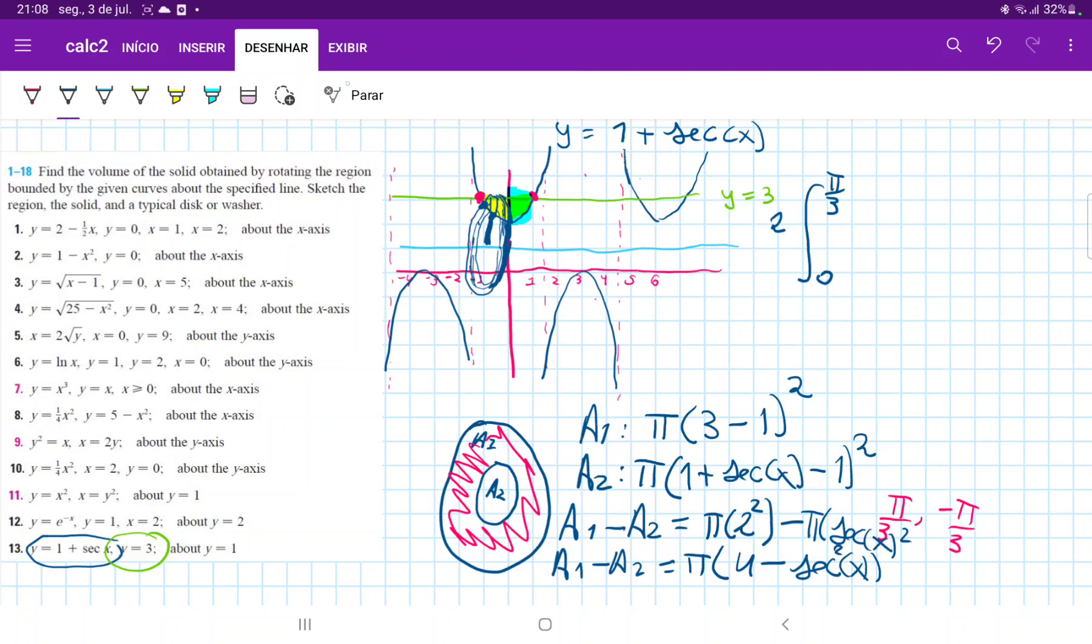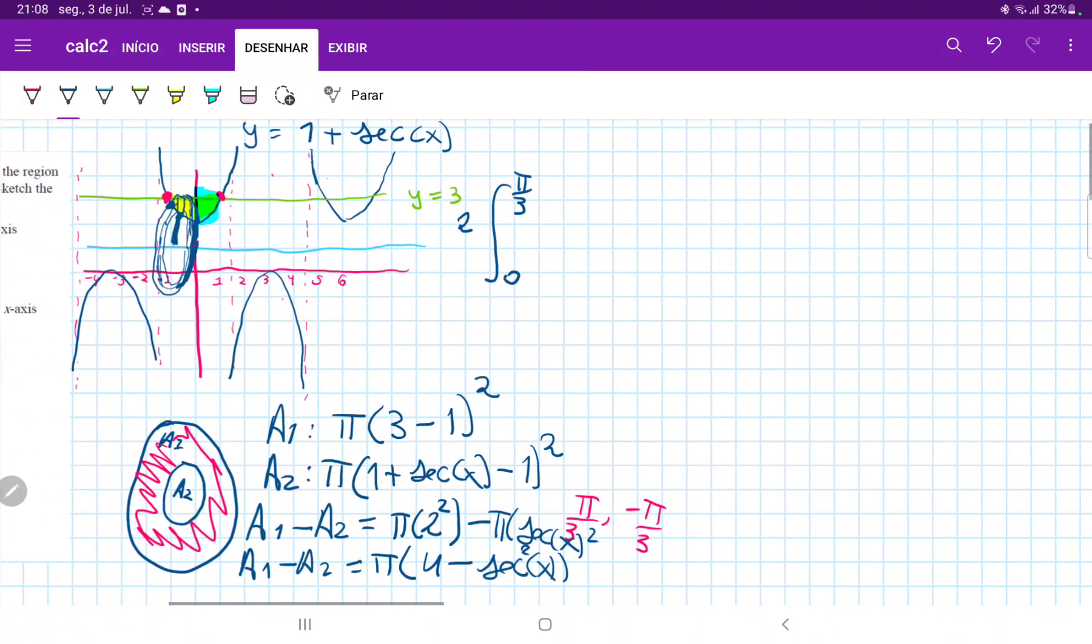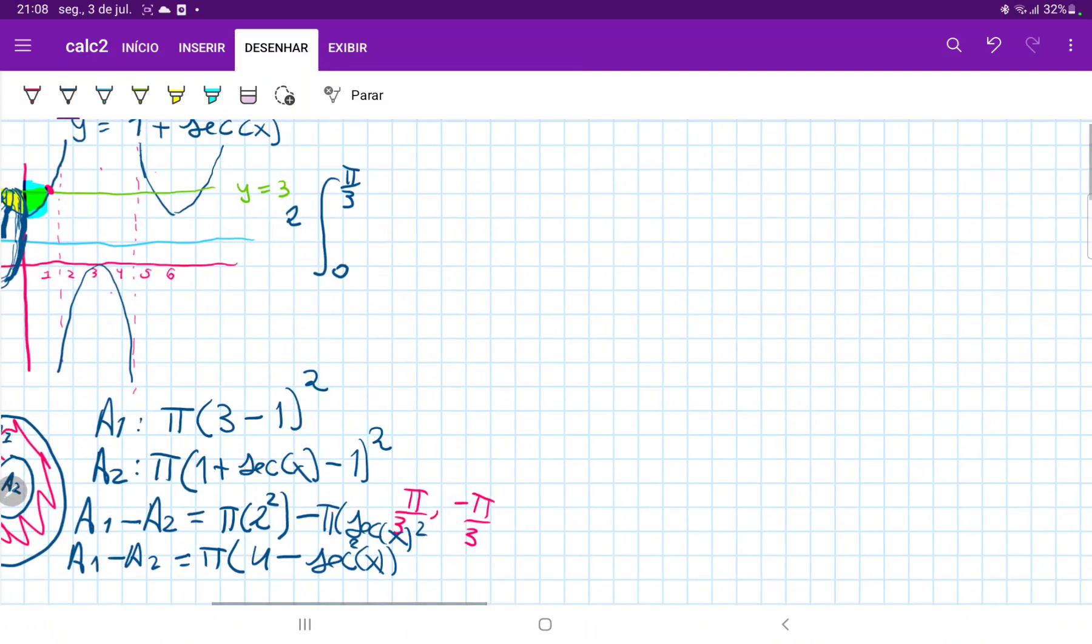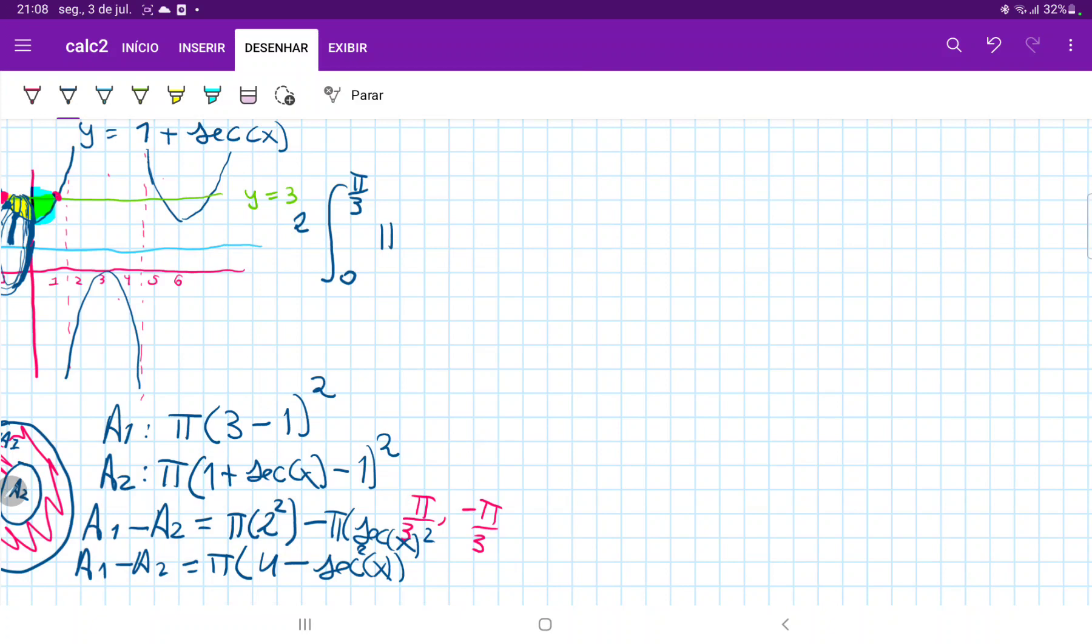So over here, let me just move to the side. And that is 2 times pi, and that is 4 minus secant squared of x. And I'm just going to put the pi outside because it's a constant dx. And this is equal to 2 pi, the integral from 0 to pi over 3, 4 minus secant squared of x dx.